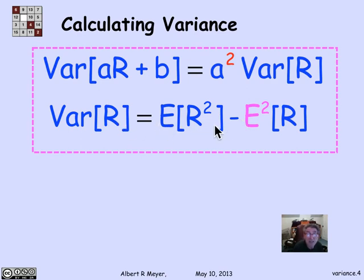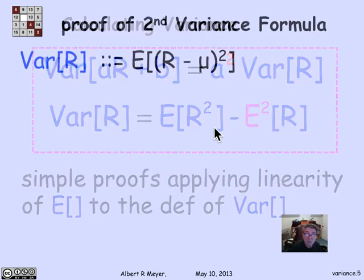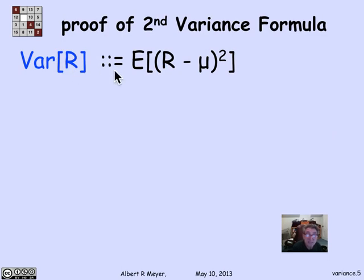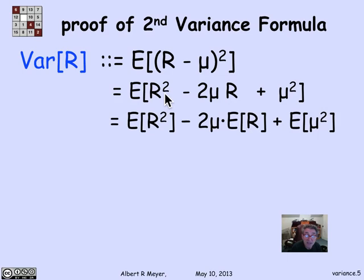I'm going to prove the second rule to show there's nothing to worry about. The variance of R is by definition the expectation of (R minus mu)². Expanding R minus mu squared gives us the expectation of R² minus 2muR plus mu². Applying linearity, I get the expectation of R² minus 2mu times the expectation of R plus the expectation of mu squared, which is simply mu squared.